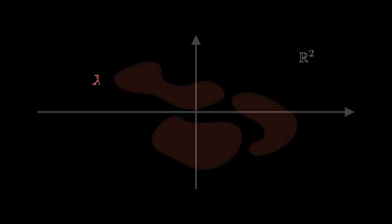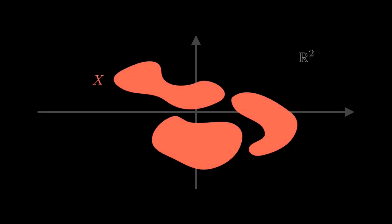I'm going to use that counting principle to try to count the number of connected components. To do that, we've got to figure out what I mean by connected components. Here's the plane — it's ℝ². In the plane, I've got a subset X, which I'm drawing as these red blobs. The number of points in set X is infinite, but I'm not trying to count the number of points. I'm just trying to count the number of blobs, the number of connected components, and I'm going to write that as B₀ of X.